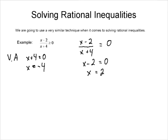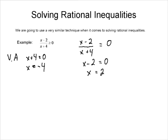Now, since our inequality is greater than or equal to, x equals 2 is going to be allowed — it makes the expression equal to zero. So on the number line we put a solid dot at 2. Since x cannot equal negative 4, that will be an open dot. Asymptotes are always open dots; whether other solutions are closed depends on whether the inequality includes equals or not.